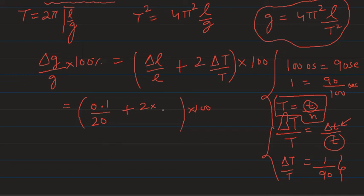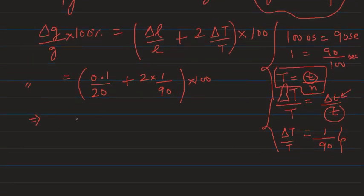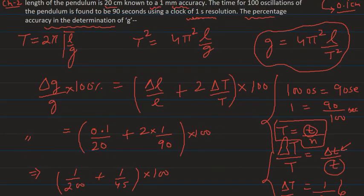Substituting into the formula: (δg/g) × 100% = (0.1/20 + 2 × 1/90) × 100% = (1/200 + 1/45) × 100%. Solving this gives approximately 2.7%. So the percentage accuracy in the determination of g is ±2.7%.